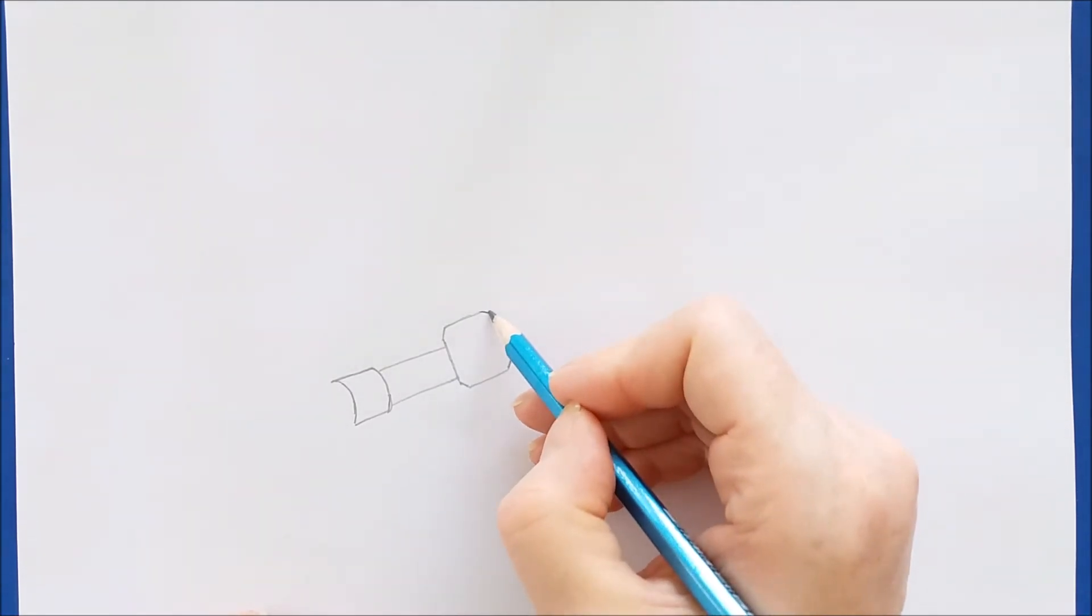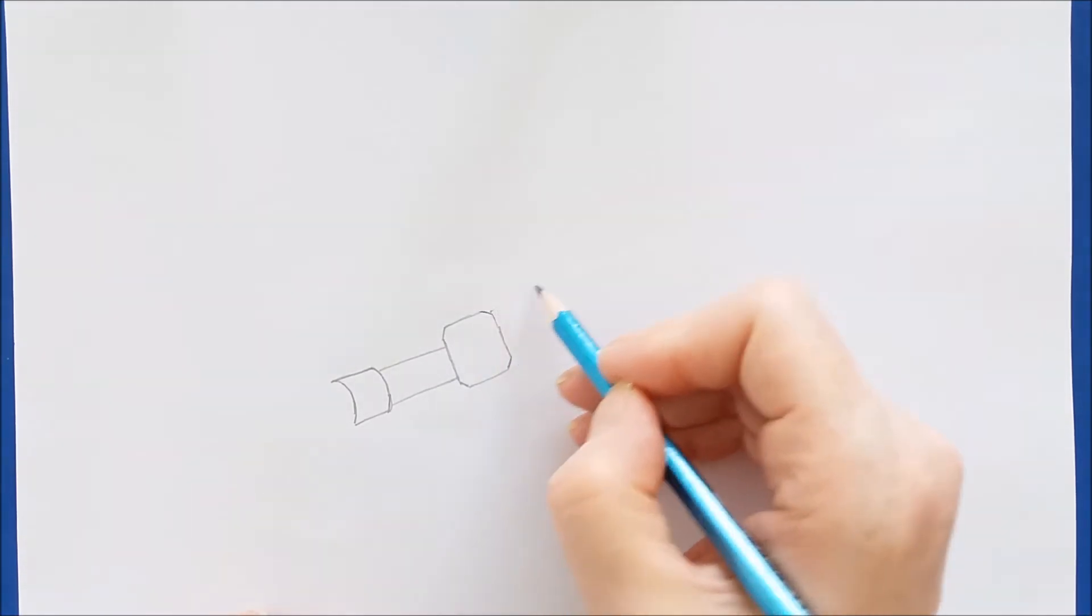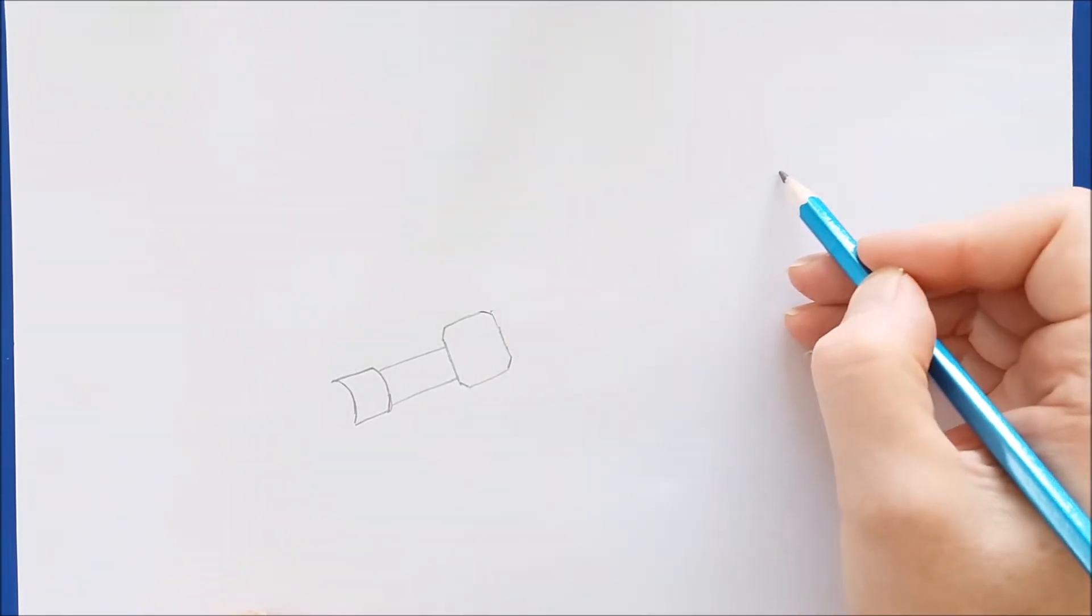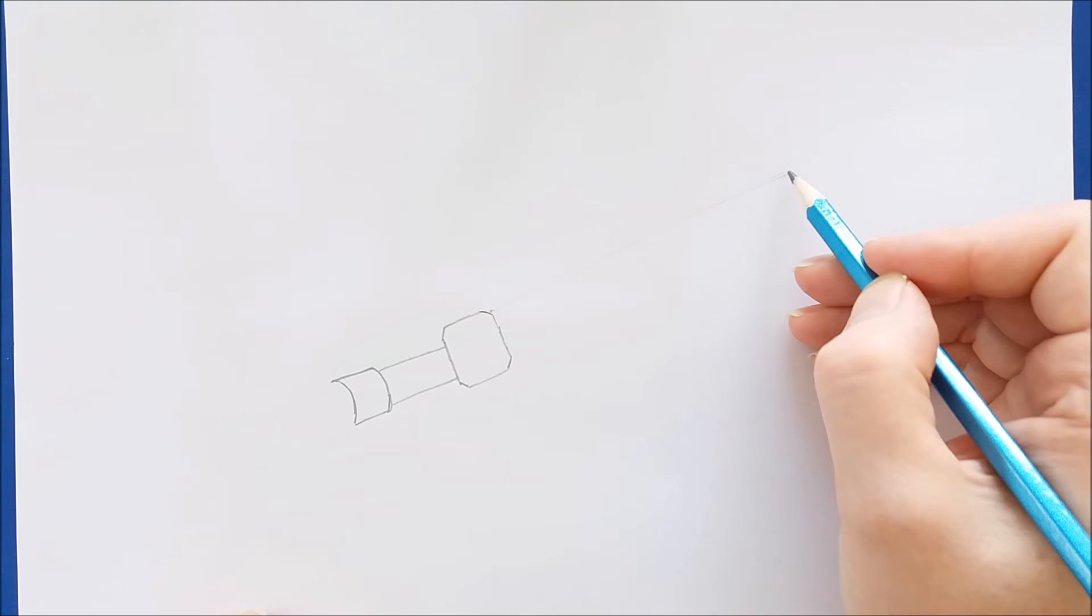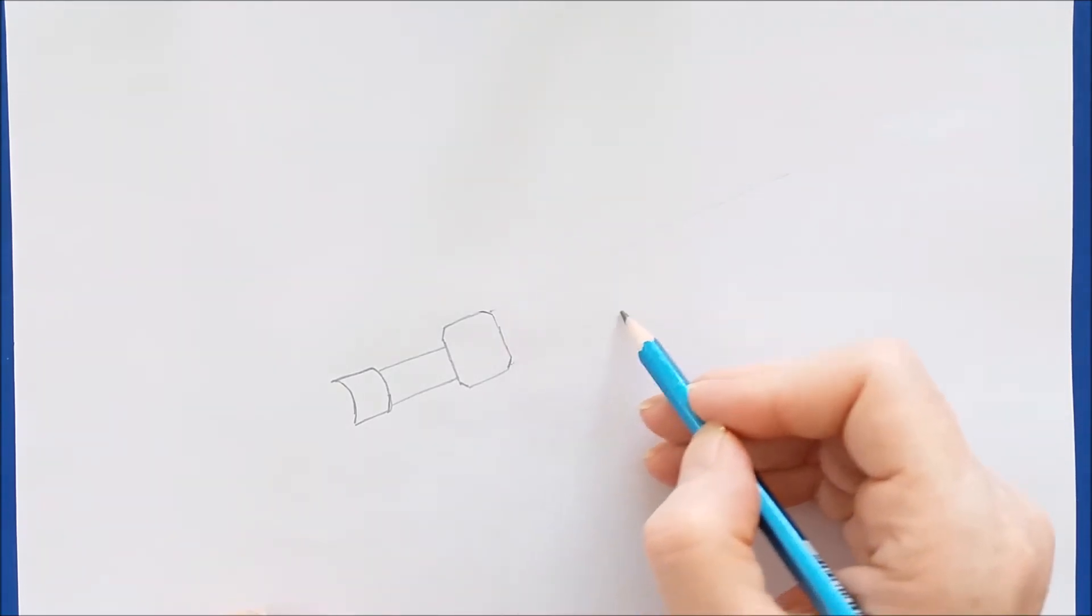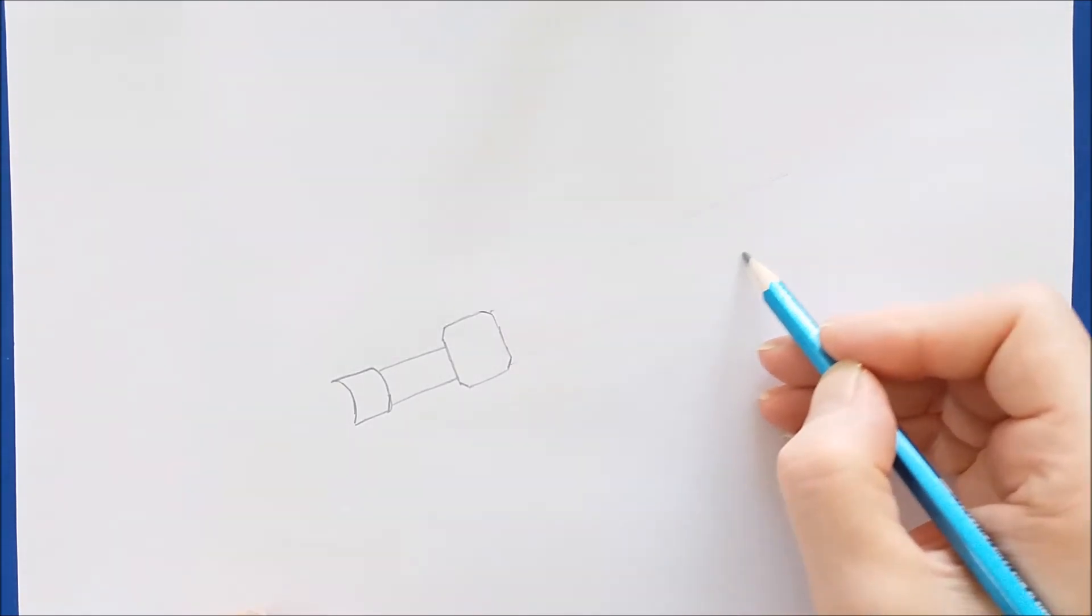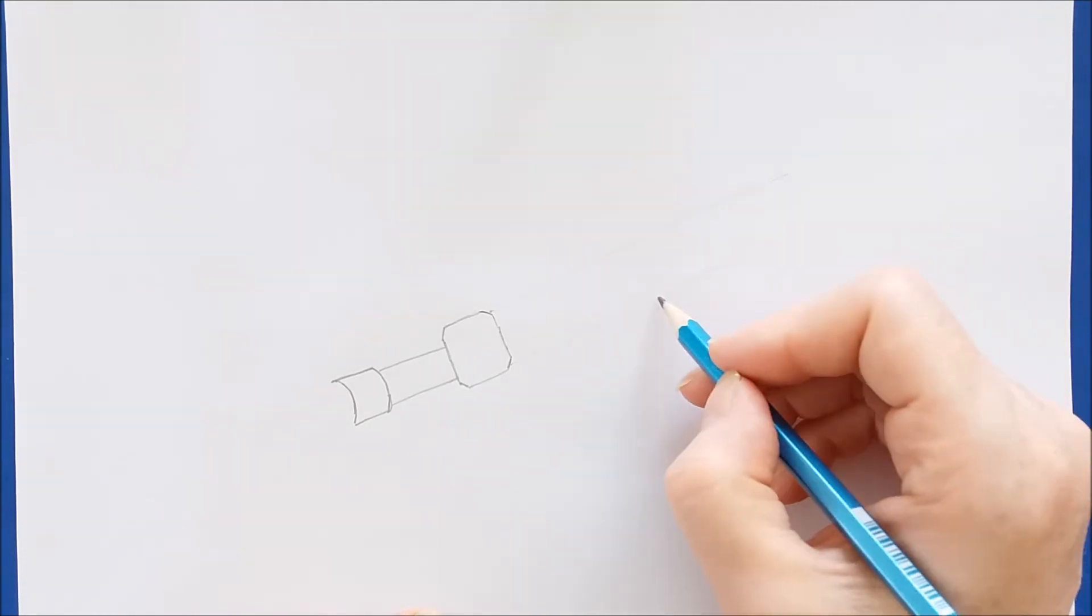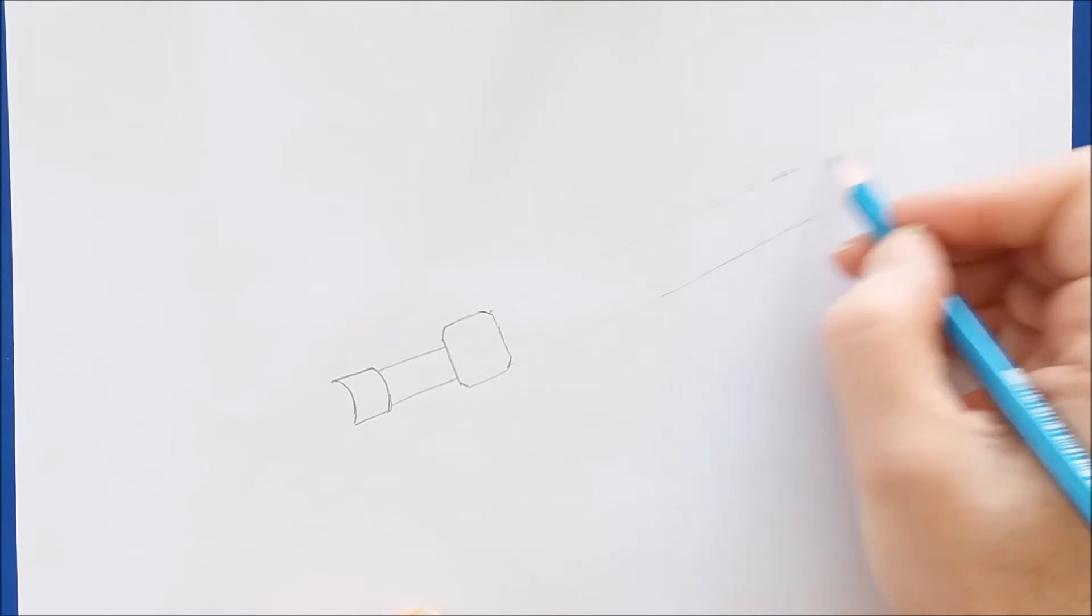The next step would be to draw your blade, and I'm drawing in some very light lines because I want to make sure I can get these lines as straight as possible before I draw a darker line on top of it. Both of these lines will come to a point right about here.